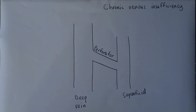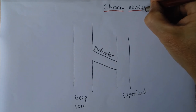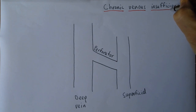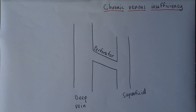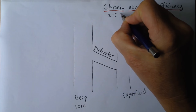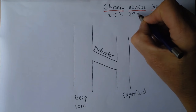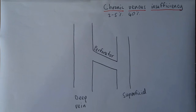Chronic venous insufficiency: chronic means it's an ongoing condition, venous is to do with the veins, and insufficiency means there is not enough physiological function in the veins for the body's venous drainage requirements. This is relatively common — it's been estimated that between two and five percent of the total population suffers from symptomatic chronic venous insufficiency, and at least forty percent have some regurgitation problems in veins causing varicose veins and things like that.